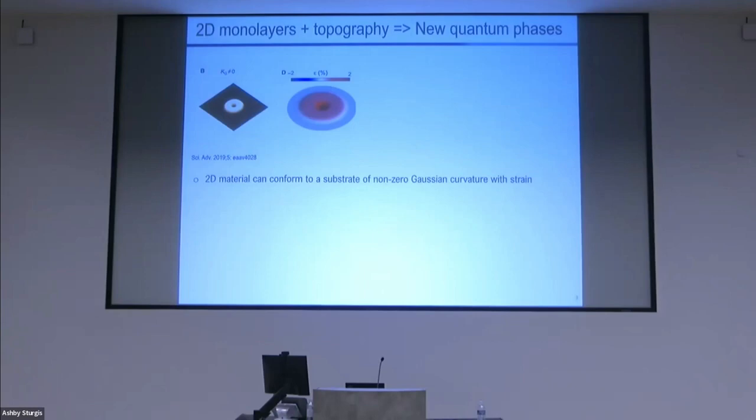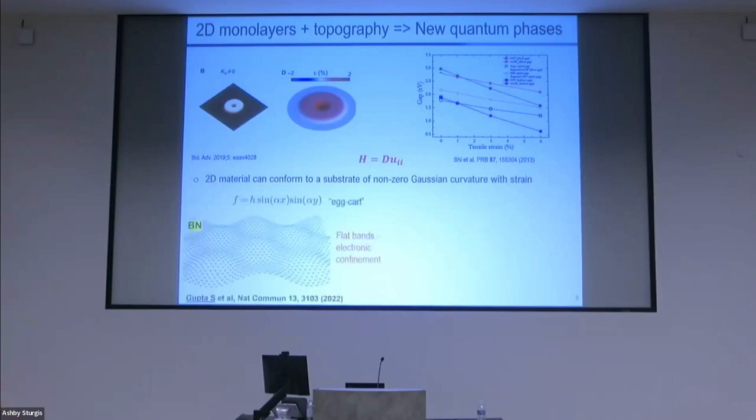Strain is very interesting because it's a tuning parameter to change different properties. It's well known that the band gap of MoS2, for example, can be changed by applying tensile strain. Strain creates a deformation potential and it acts as a scalar potential in the Hamiltonian. Imagine if you're able to apply periodic modulation of strains - for example, if you can take boron nitride and deform it in the shape of an egg carton, what you do is create this periodic strain. What periodic strain will do is create a periodic confinement potential, and that can create flat bands.